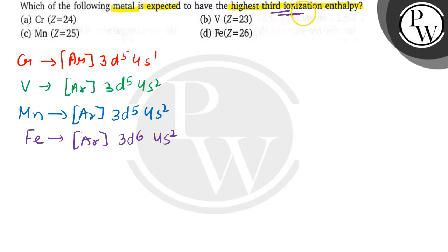Highest third ionization enthalpy means removal of the third electron. Sorry, here should be 3d3 in the electronic configuration of V.